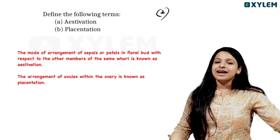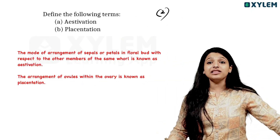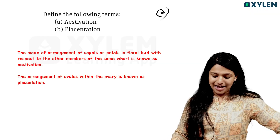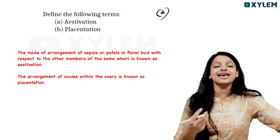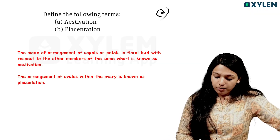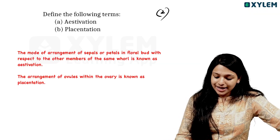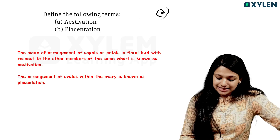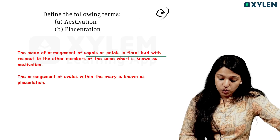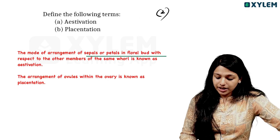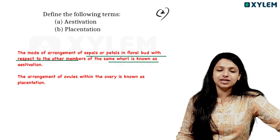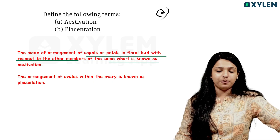Next: Define the following terms — Aestivation and Placentation. Aestivation is the mode of arrangement of sepals or petals in a floral bud with respect to the other members of the same whorl.